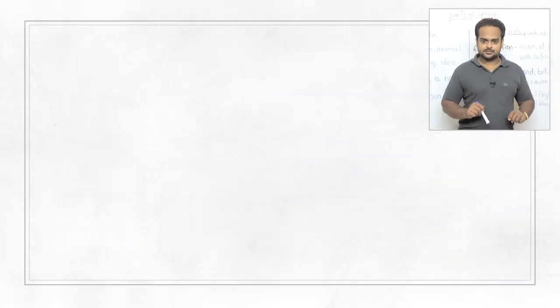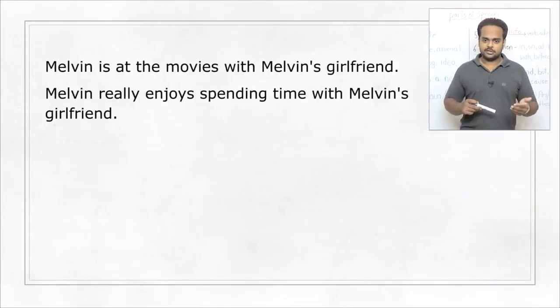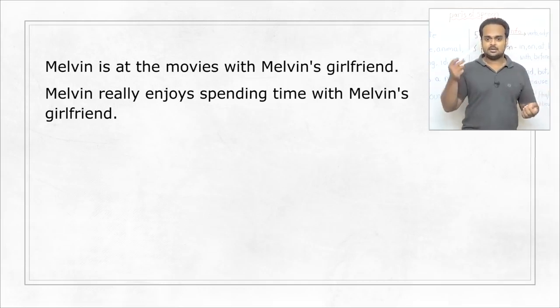Well, take a look at this sentence. Melvin is at the movies with Melvin's girlfriend. Melvin really enjoys spending time with Melvin's girlfriend. Now of course that sounds really stupid and that is because, can you tell me why? The problem is that we keep repeating Melvin and Melvin's girlfriend. And that is very unnatural. We don't talk like that. And to avoid that kind of repetition we can use pronouns.